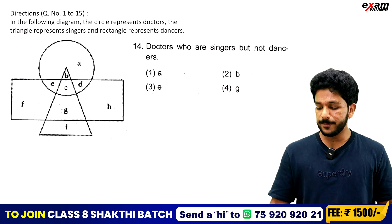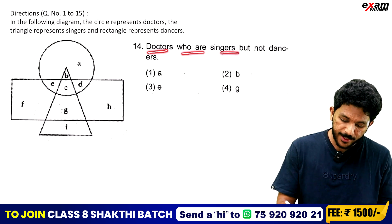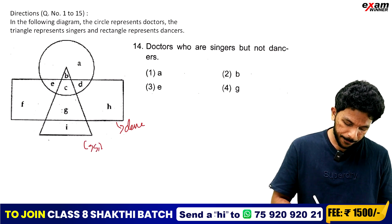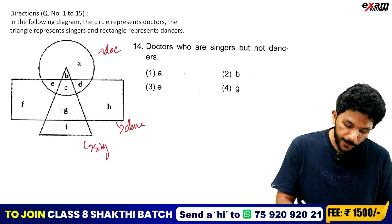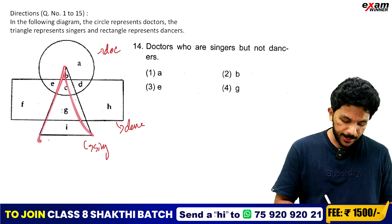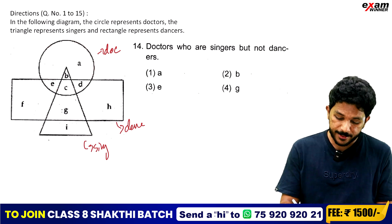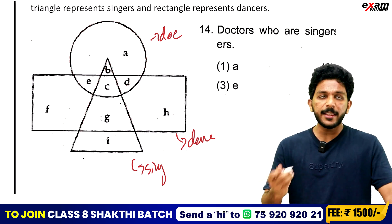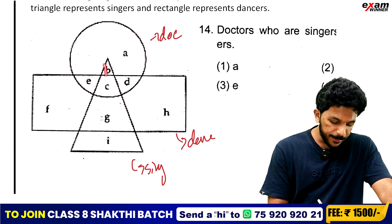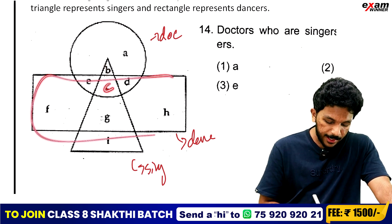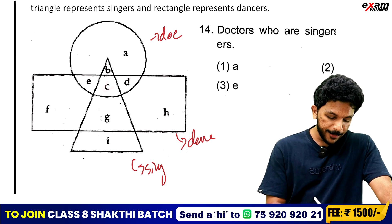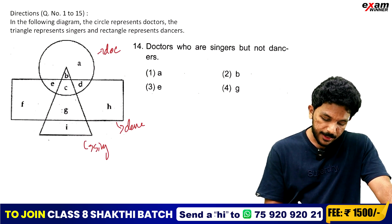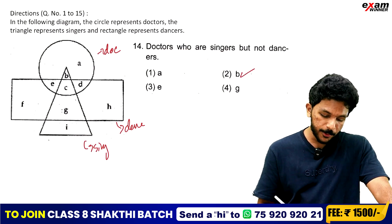Now we have a question — we are looking at doctors who are singers but not dancers. Rectangle is dancer, triangle is singer, circle is doctor. Doctor and singer are circle and triangle. Then, if you want to choose B and C — if we choose B, we choose to choose C. C is not a rectangle, so this is option B. B is a triangle, circle, and circle — singer is a dancer. That is the doctors who are singers. That is option 2, that is B.